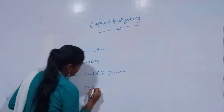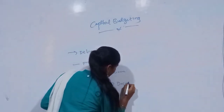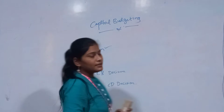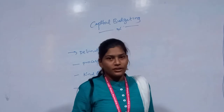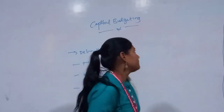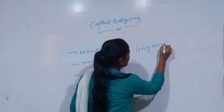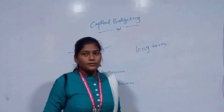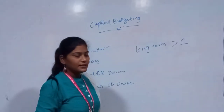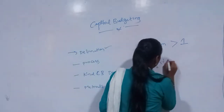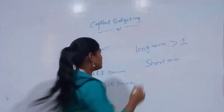We will also cover the methods which we use in order to conduct capital budgeting decisions. When it comes to definition, capital budgeting technique is a long-term planning technique which every organization uses irrespective of their size and management. When we say long term, we only refer to projects which have a lifetime of more than one year. All projects with less than one year come under the short term, so capital budgeting is strictly a long-term decision.